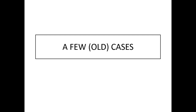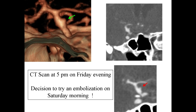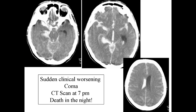Case one: a grade 1 SAH with severe headaches 15 days prior. On CTA reconstruction, a blister aneurysm was visible with massive bleeding. The CTA was done at 5 p.m. on Friday evening, and we decided to treat the patient the next day. But during the night, two hours later, the patient had sudden clinical worsening and died. He re-bled very early and rapidly after hospital admission — illustrating the urgency of treating these lesions.